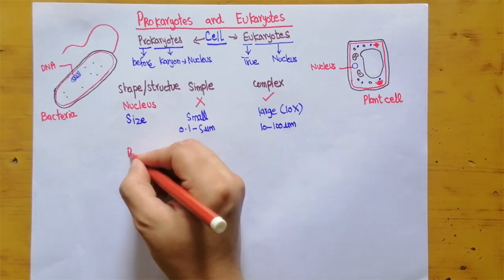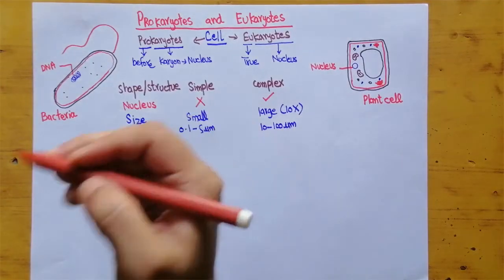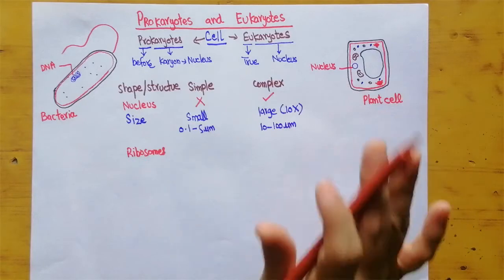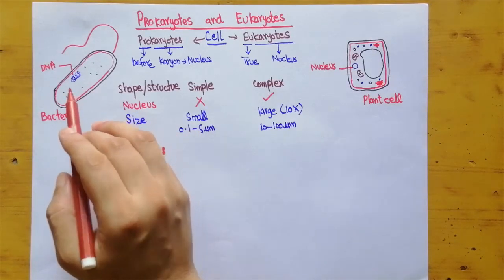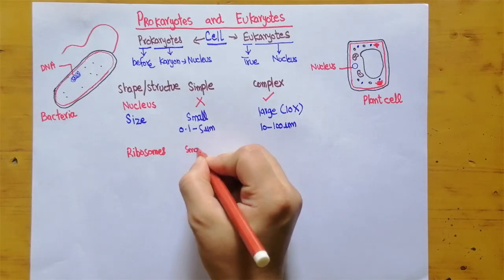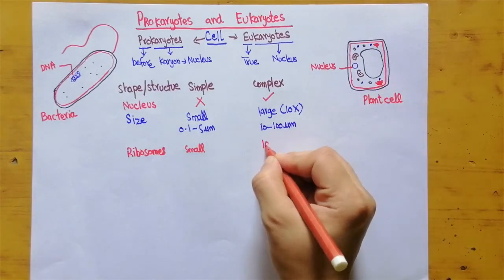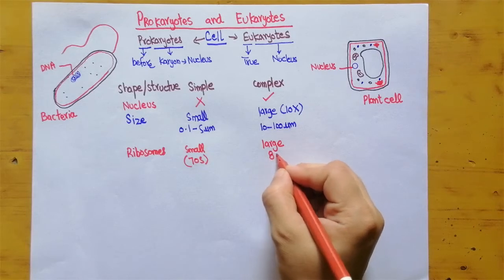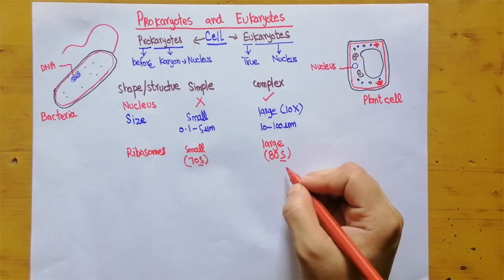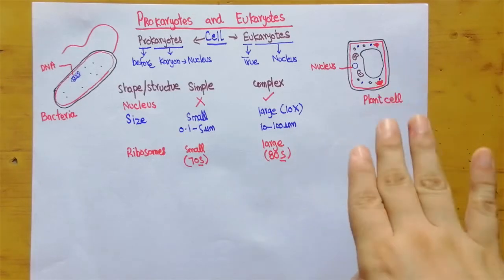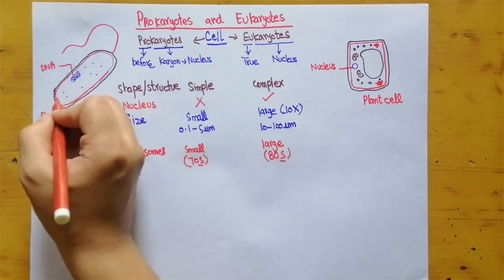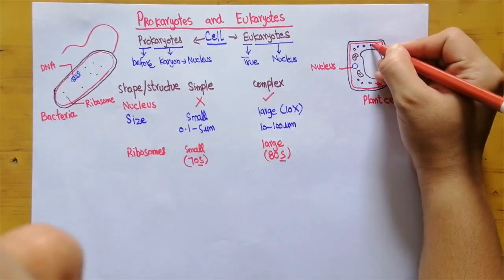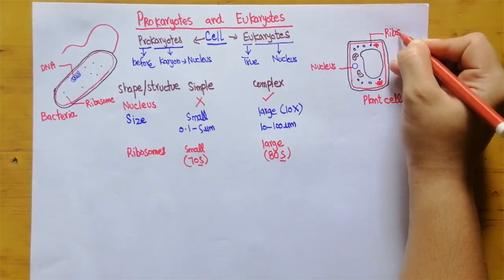Another difference is ribosomes — the machinery used to make proteins. Both cell types have ribosomes, but the ribosomes in prokaryotic cells are very small while those in plant cells are very large. In prokaryotes they are 70S, and in eukaryotes they are 80S. The 'S' is a Svedberg unit, used to measure the size of an organelle.